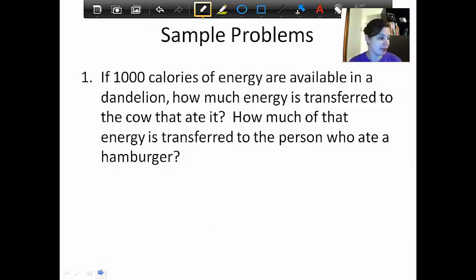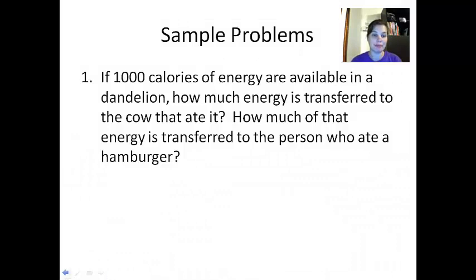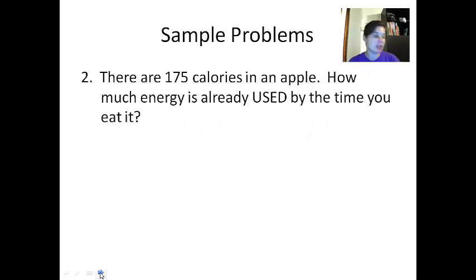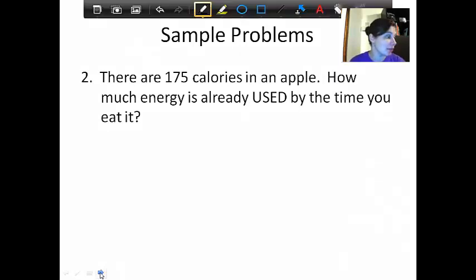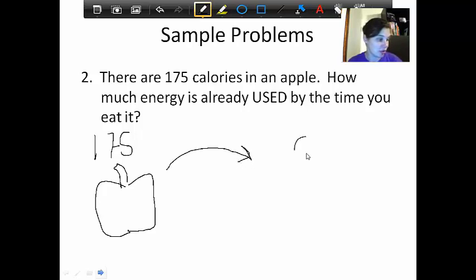One more sample problem. If there are 175 calories in an apple, let's do the apple here. Here's my apple. And it has 175 calories. I want to know how much energy is used by the time you eat it. So you're eating the energy from the apple. We know only 10% of the energy is passed on. So what this means by how much is used is how much do you not get, how much is not passed on. So to figure that out, we first want to figure out again what's 10% of 175, because that tells us how much we actually get.